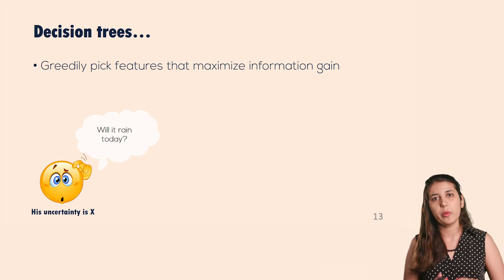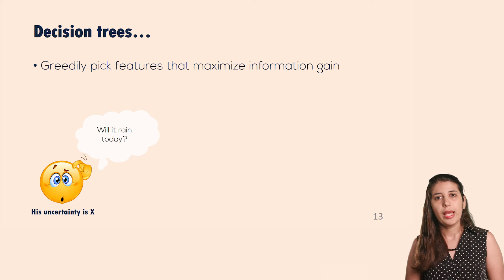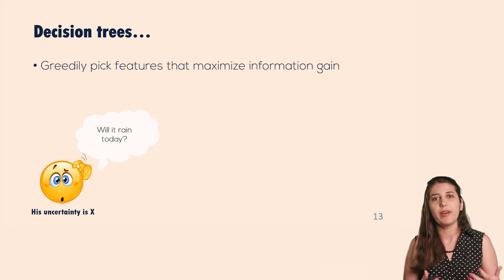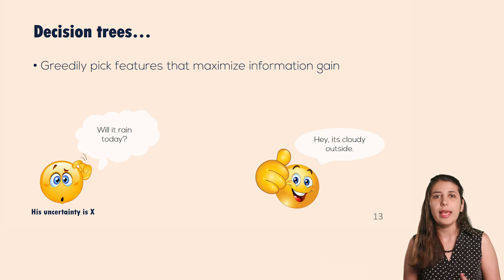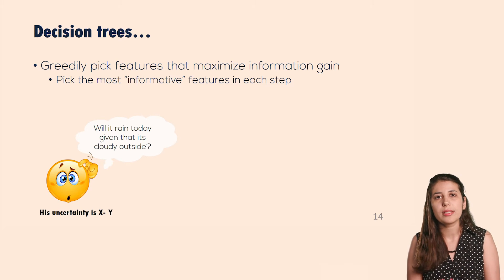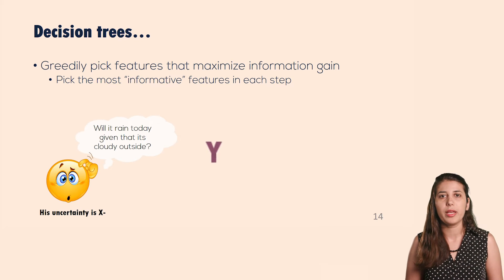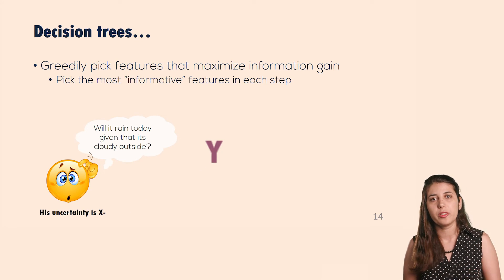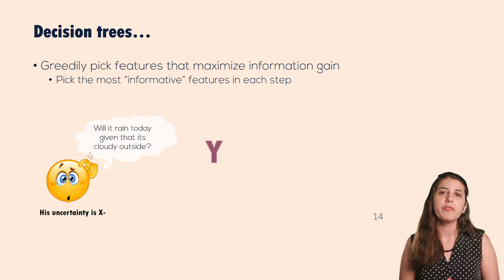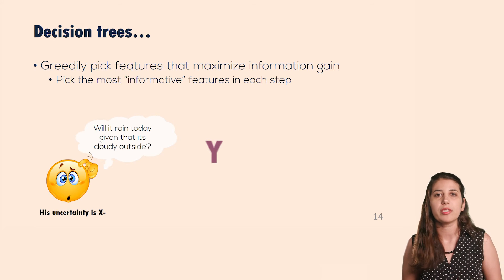Decision trees in each step pick the feature with the most information gain. To explain information gain, consider the question: will it rain today? We have some uncertainty about that — let's call it x. Now someone tells us it's cloudy outside. Our uncertainty is no longer x but some other value x minus y. That reduction in uncertainty is the information gain. Decision trees try to pick the most informative feature in each step and therefore reduce the uncertainty of the final result they output.